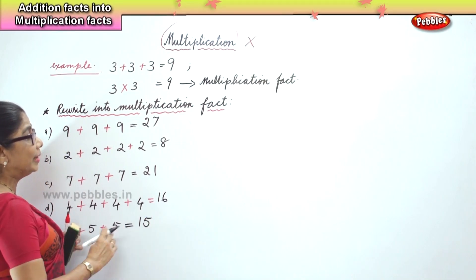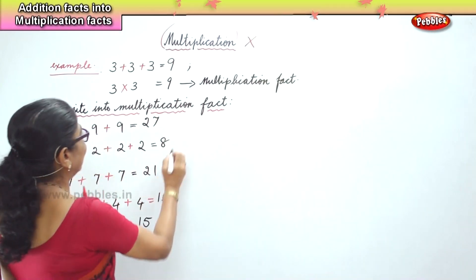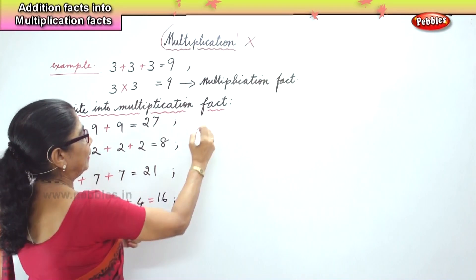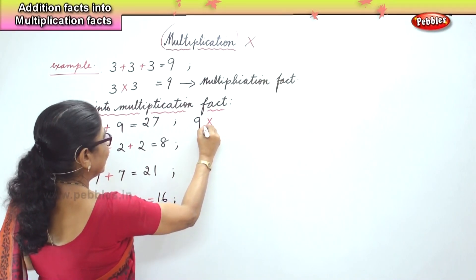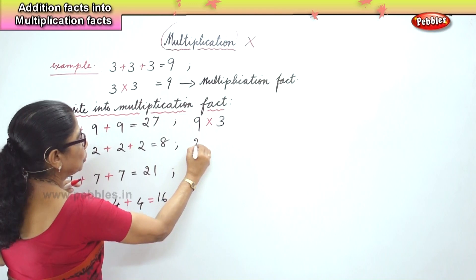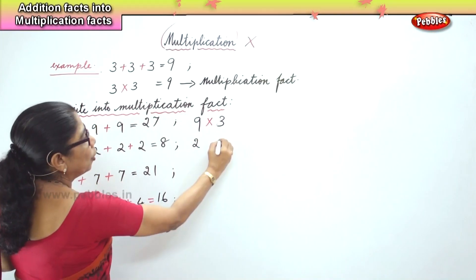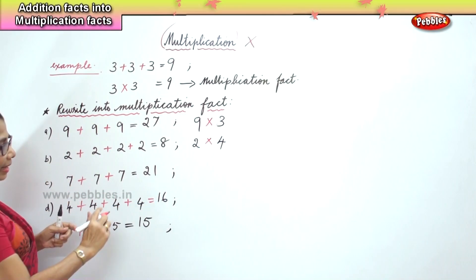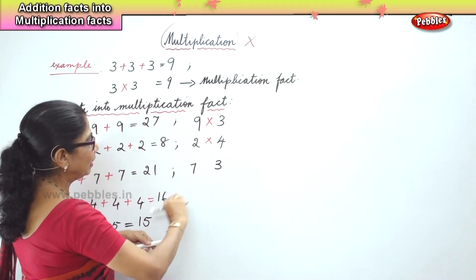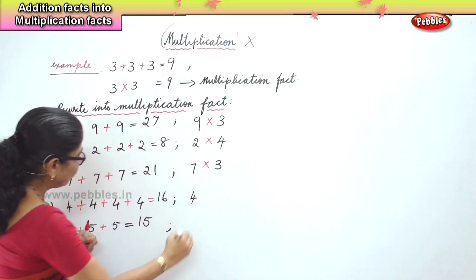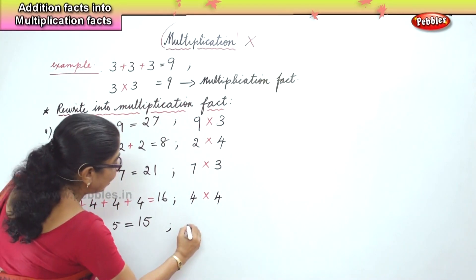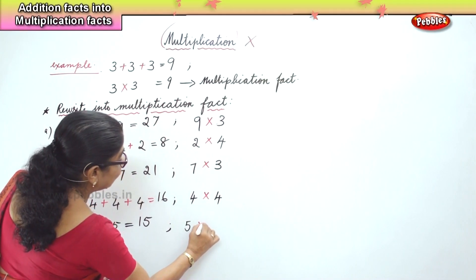Now how do we form the multiplication fact? For each of these we can form a multiplication fact. 9 how many times? 3 times. 2 how many times? 4 times — 4 times 2. 7 how many times? 3 times — 7 3 times. 4 how many times? 4 times. And finally 5 how many times? 3 times.